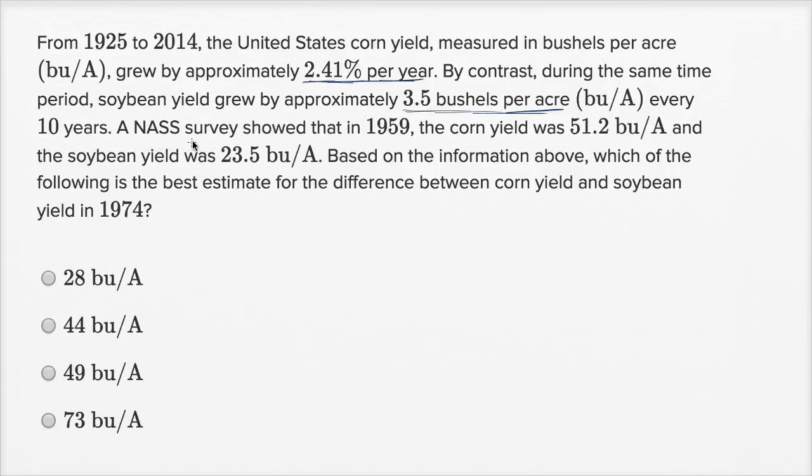An NASS survey showed that in 1959, the corn yield was - actually let me make a little table here. I'm already sensing this will be useful. So let's think about this. We're going to say, so an NASS survey showed that in 1959, the corn yield was 51.2 bushels per acre, so this is going to be corn, and then they talk about soybean.